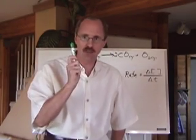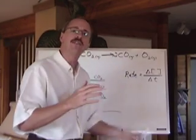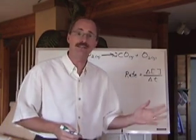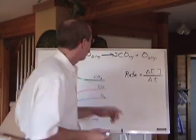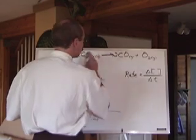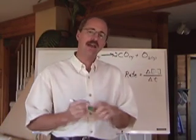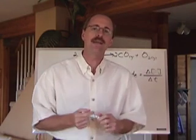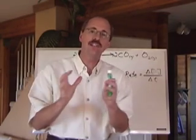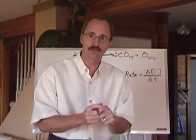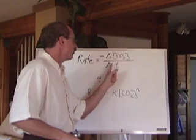In chemical kinetics, we're going to be interested in the rate of decomposition of the reactant only. We're not going to worry about the products, because the products can actually reform the reactants and complicate things. So the rate is going to be the change in the concentration of CO₂ over the change in time. We put a negative sign in front because CO₂ is being reduced in concentration, making the rate a positive number.